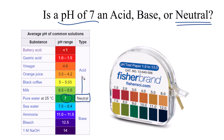As you go lower on the pH scale, you get more acidic solutions. As you go higher, you'll get a more basic or alkaline solution. But 7 is right in the middle, and that's just the way the pH scale is set up, so that 7 is neutral.